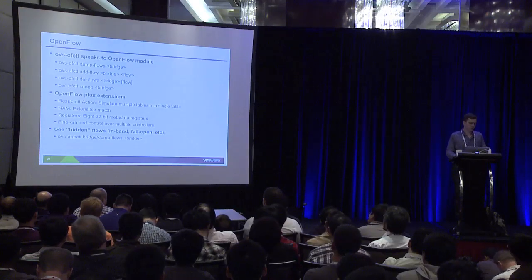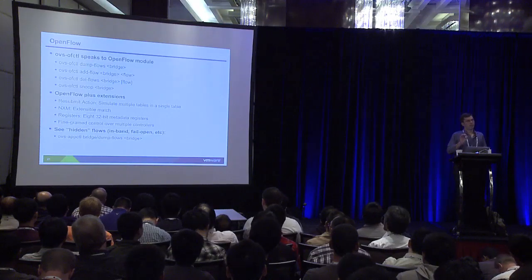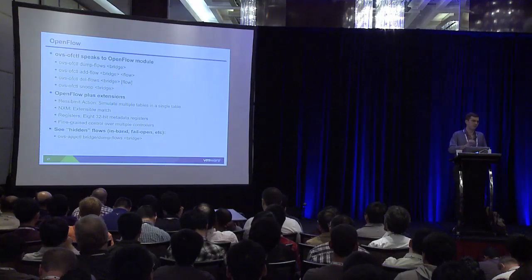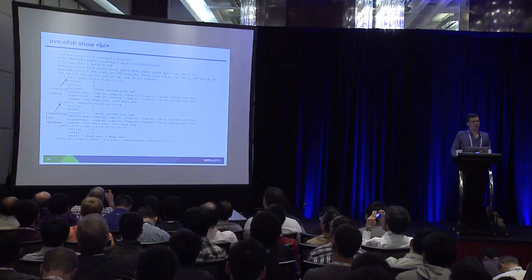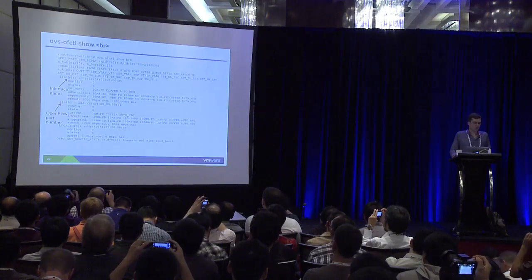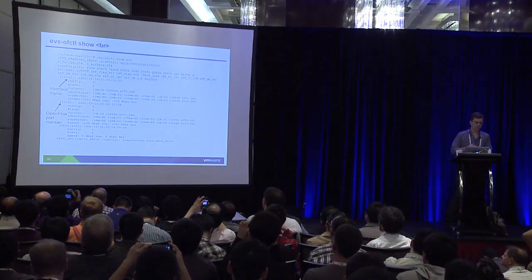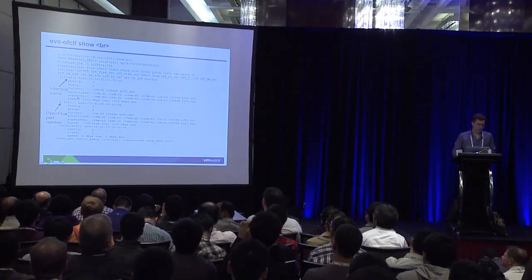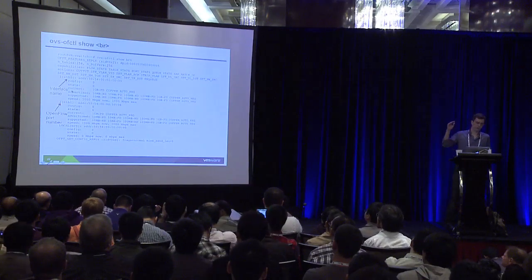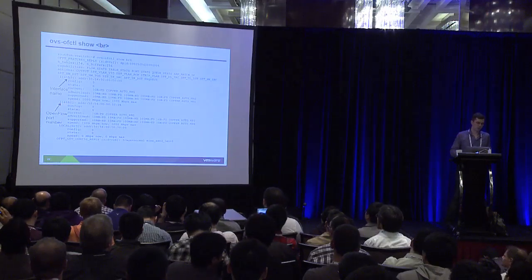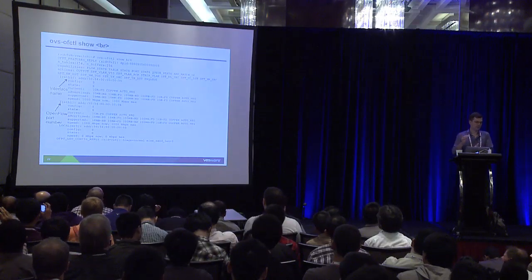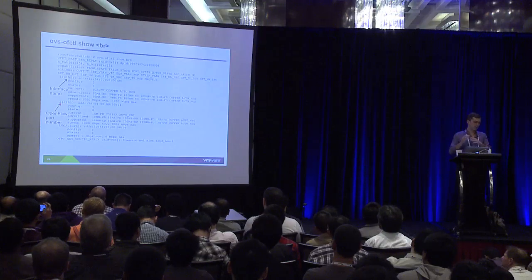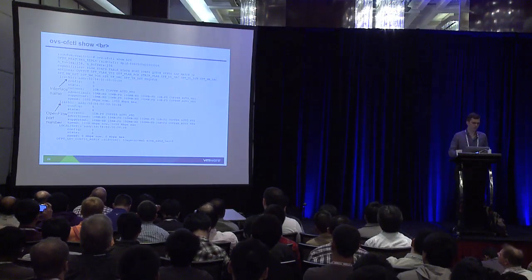I'll get into hidden flows — the flow table you see through OpenFlow isn't necessarily the flow table actually being maintained by the switch. Here's an example of running the ovs-ofctl show command for a particular bridge. These rows show the different interfaces attached to a bridge — eth0 is on OpenFlow port 1, and there's state about the interface. The OpenFlow port numbers are important because when we talk about user-space OpenFlow versus data path flows, those numbers are not necessarily equal.